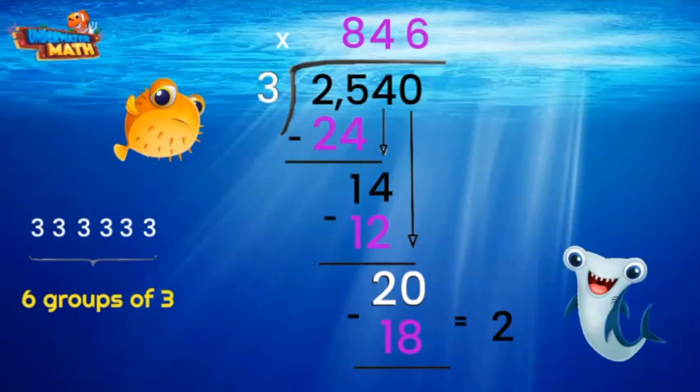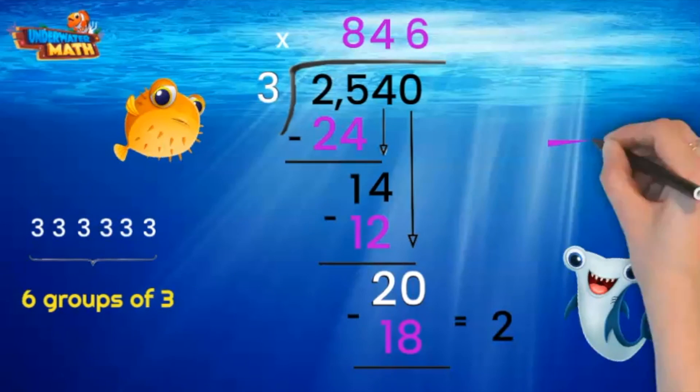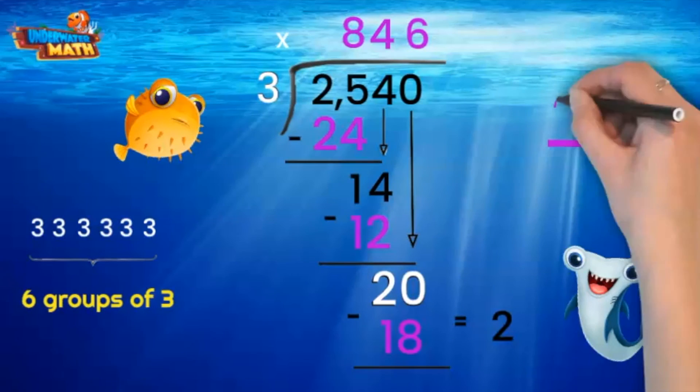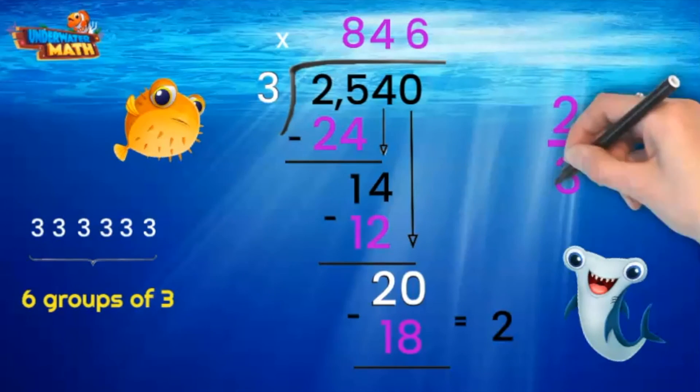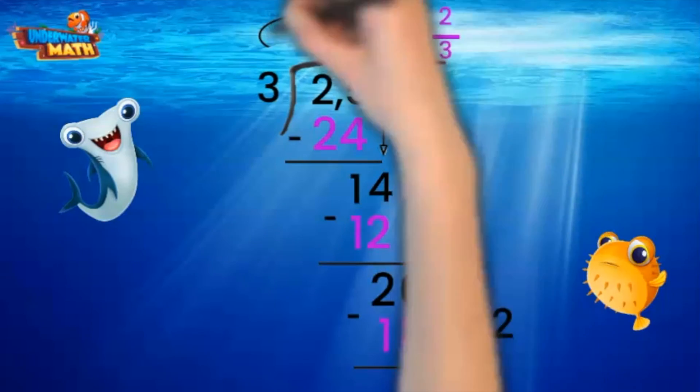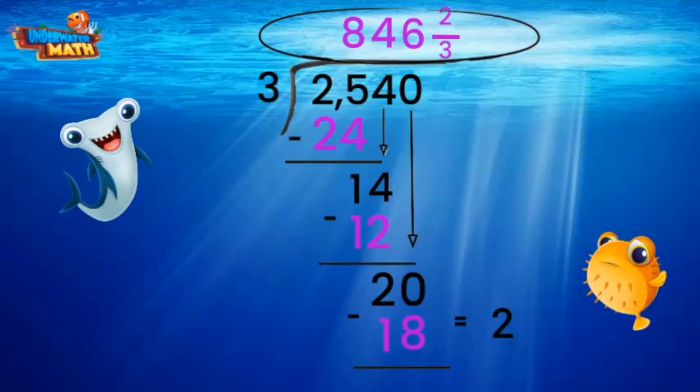There are no more numbers to bring down, so 2 is our remainder. To represent the remainder, you write a fraction. The remainder is the numerator and the denominator is the divisor. The quotient to the problem is 846 and 2/3. Thanks, Sir Puffington, for your help along the way. Good luck practicing!